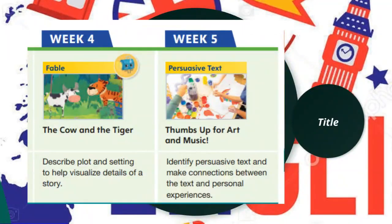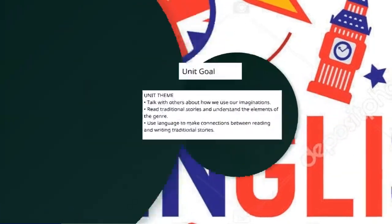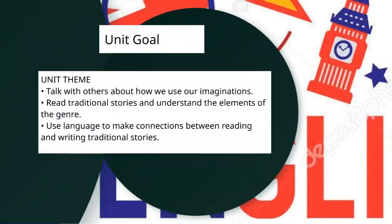In week four, we will read The Cow and the Tiger and describe the plot and setting to help us visualize the details in the story. In week five, it's a persuasive text — we will identify the persuasive text and make connections between the text and personal inferences. The unit goal is: we will talk with others about how we use our imaginations, read traditional stories, understand the elements of the genre, and use language to make connections between reading and writing.